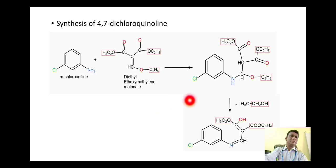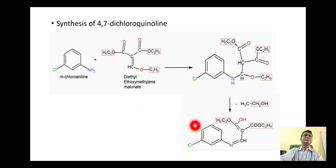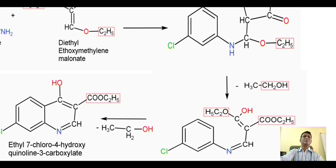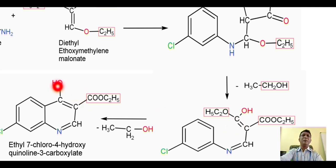This compound then undergoes a chemical reaction to release one ethanol molecule — the ethoxy group and a hydrogen combine to make the ethanol molecule which is removed, and a double bond is generated between this nitrogen and this carbon. This derivative then undergoes cyclization in such a way that this ethoxy group and the proton on the benzene ring alpha to the nitrogen make up a second ethanol molecule which is removed, and a cycle is formed between these two carbons.